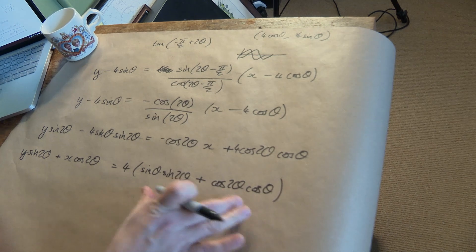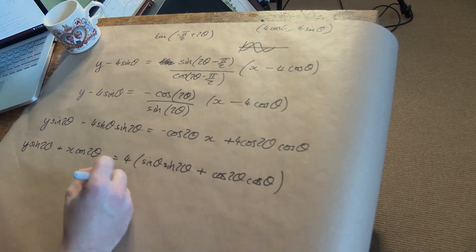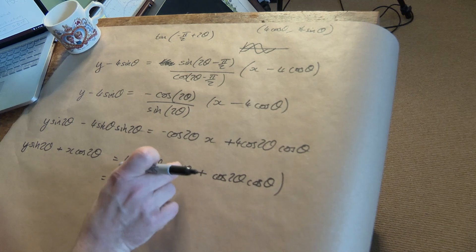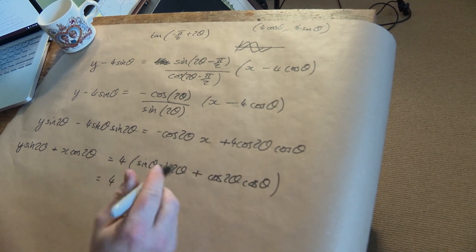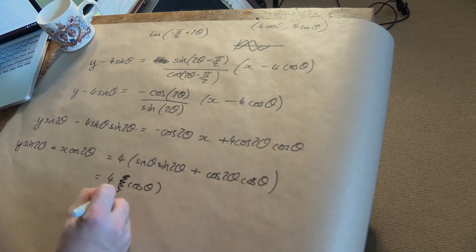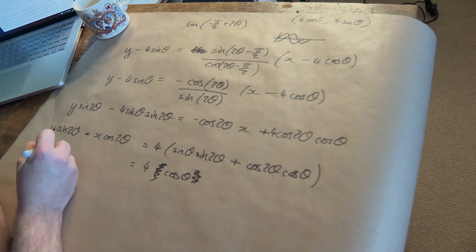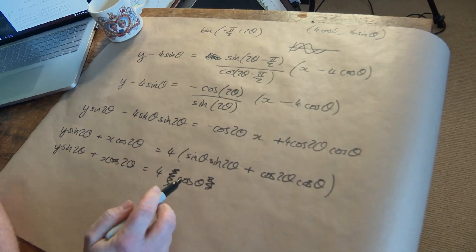And once again this thing is a recognizable format, it's got sines, cosines, it's equal to the subtraction of the two arguments, so 2 theta minus theta, it's theta, it's cosine of that, so it's 4 cosine theta. Don't need these brackets. Y sine 2 theta plus x cosine 2 theta equals 4 cos theta.